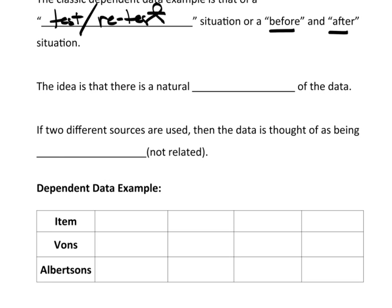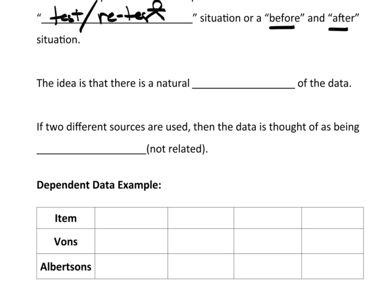Now, when we're talking about dependent data, the basic idea is that there's some type of natural pairing. A natural pairing of the data, and that's because it's two data points or data values that came from the same source. If they came from the same source, then there's a natural pairing.